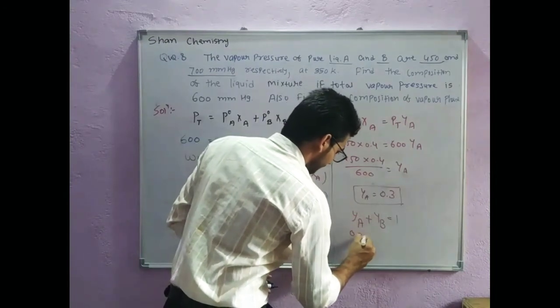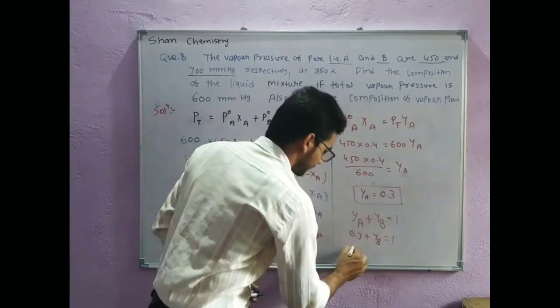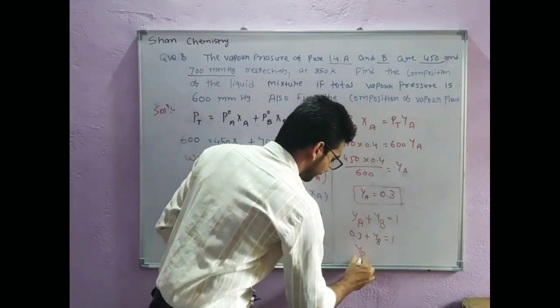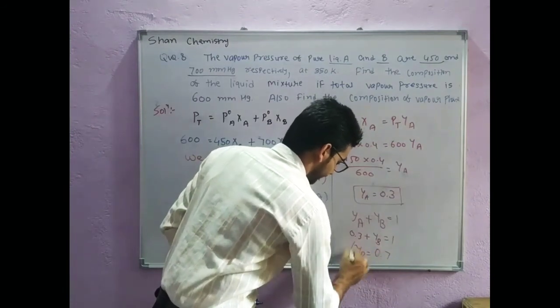Since Y_A is 0.3 and Y_A plus Y_B equals 1, we get 0.3 plus Y_B equals 1, so Y_B equals 0.7.